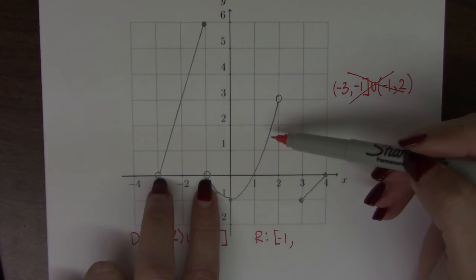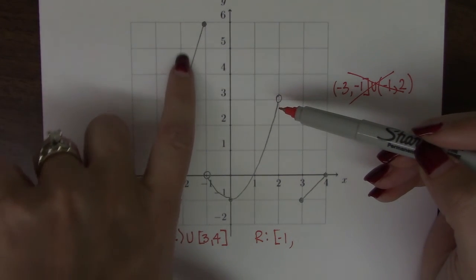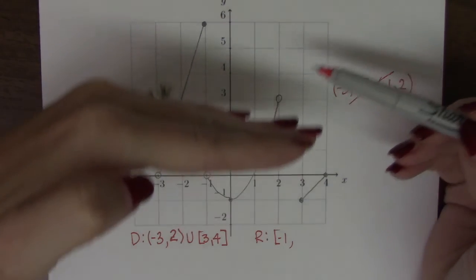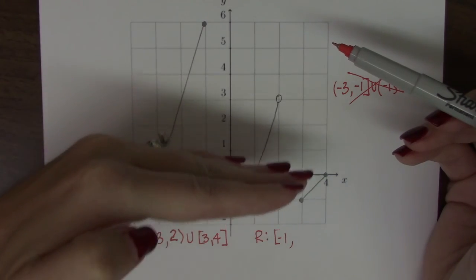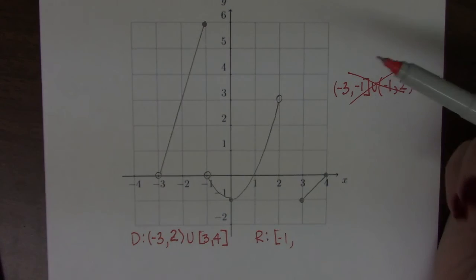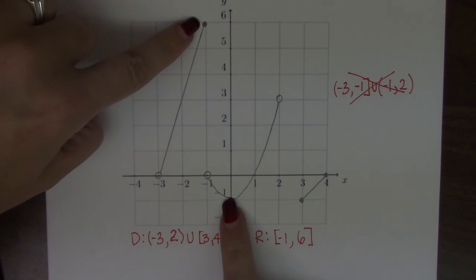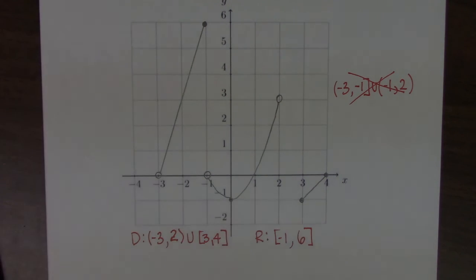This piece of the graph keeps going up to 3 and stops, but this piece of the graph goes all the way from 0 to 6. So anywhere along here from negative 1 to 6, I can find a y value. So the range is negative 1 to 6, and both of these endpoints are included because I can actually find values of x that will give me those endpoints.